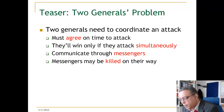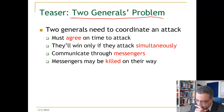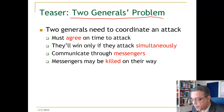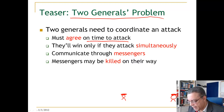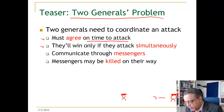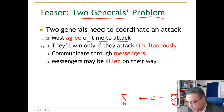Let us look at the Two Generals problem. We have two generals who need to coordinate an attack. They are situated in different places. To coordinate the attack, they want to agree on the time of the attack, and they will win only if they attack simultaneously. They do this by sending a messenger. A messenger goes from one to another — general A sends to general B: let's attack tomorrow at eight o'clock. And if they agree, they will attack and can win the battle.